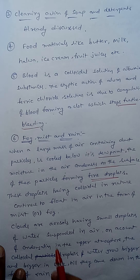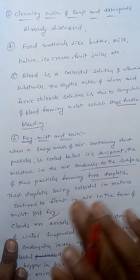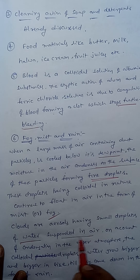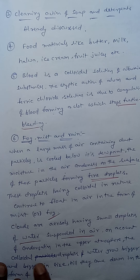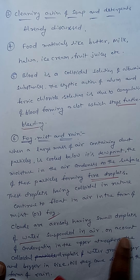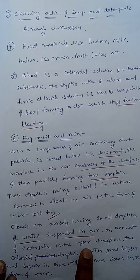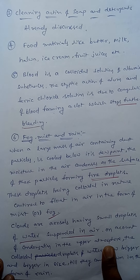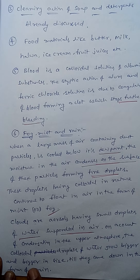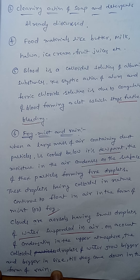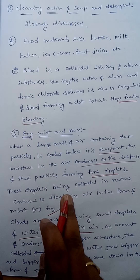Clouds are aerosols having small droplets of water suspended in air. On account of condensation in the upper atmosphere, the colloidal droplets of water grow bigger and bigger in size until they come down in the form of rain.